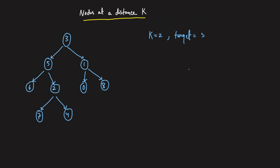Since we require to travel in both the upward and downward directions, we will mark parent pointers. We do a BFS traversal using a queue data structure, initially inserting the root. First, we take node 3. The left of 3 is 5, so we push 5 into the queue and mark that 5's parent is 3. The right of 3 is 1, so we push 1 into the queue and mark that 1's parent is 3. We can use a map to store these parents.